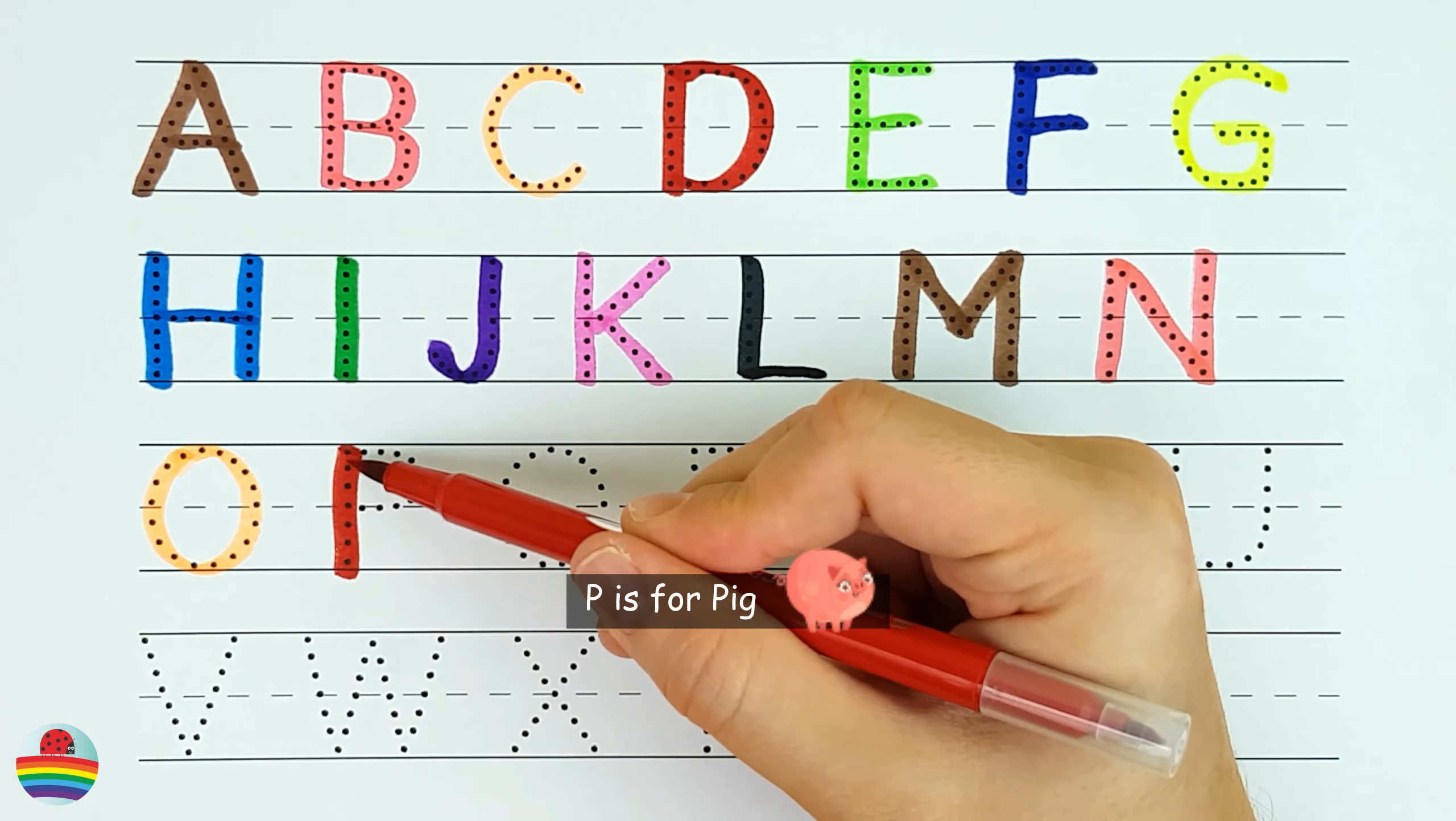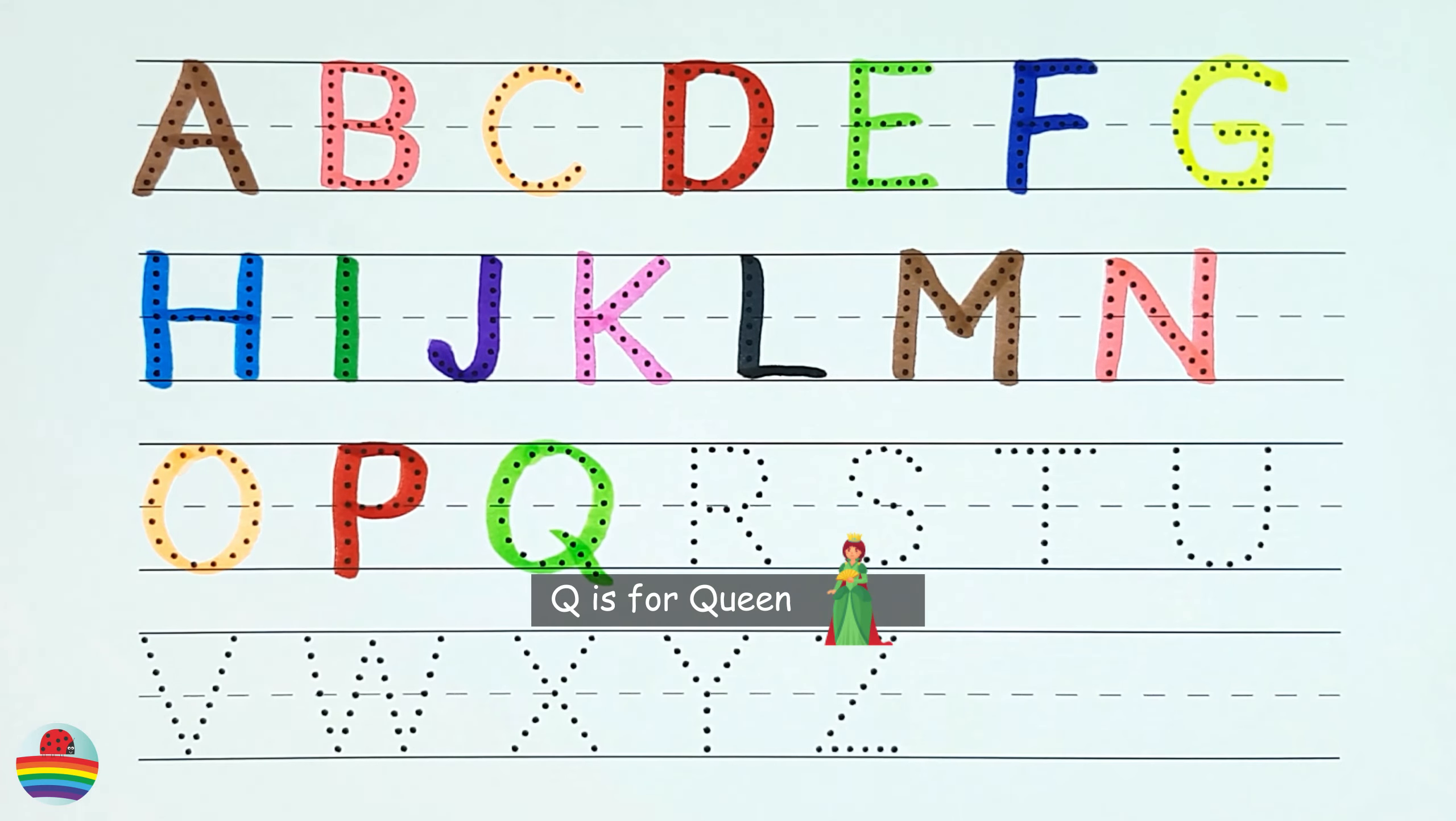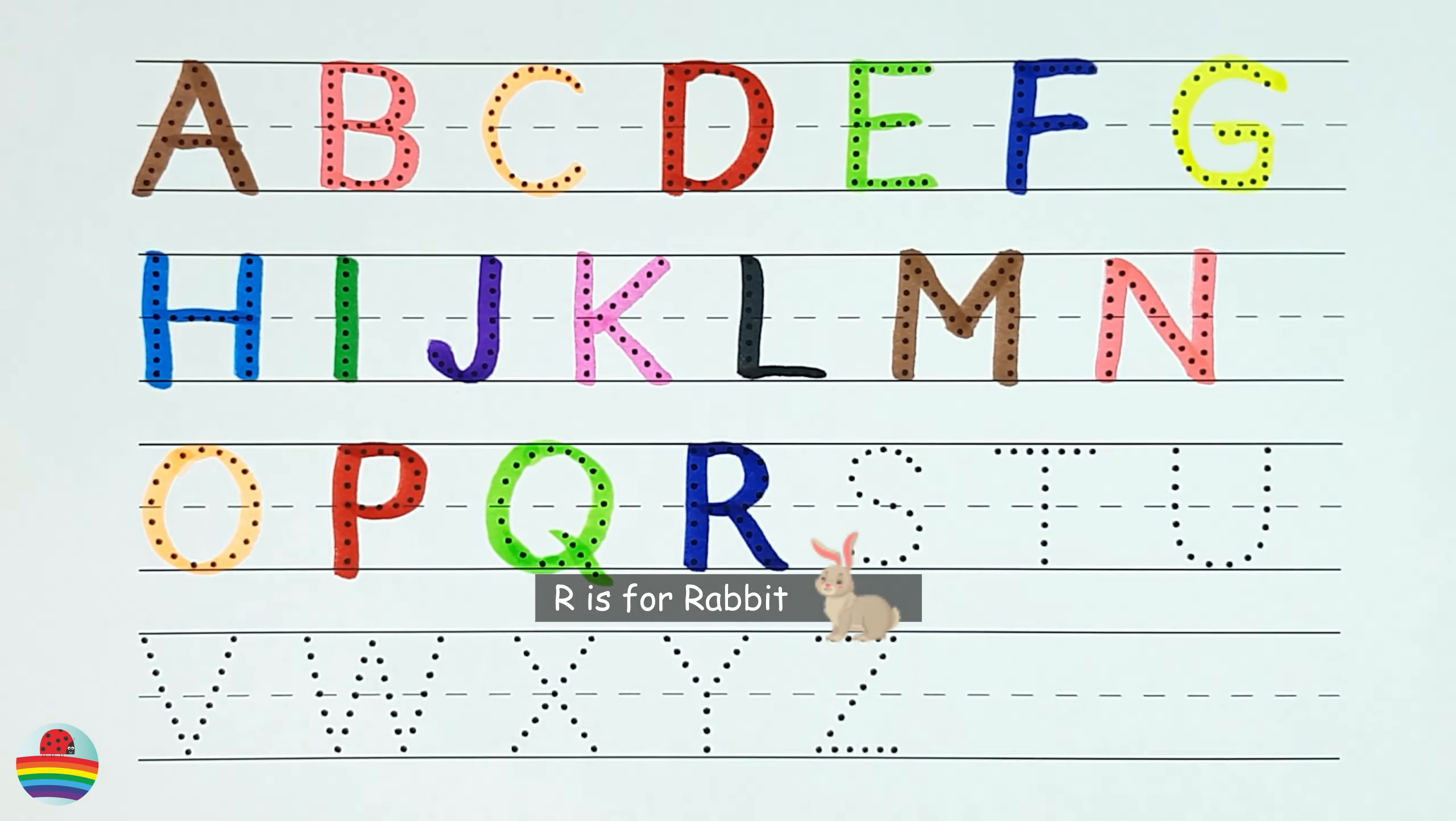P. P is for pig. Q. Q is for queen. R. R is for rabbit.